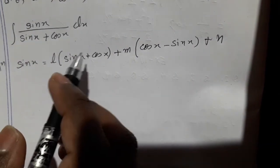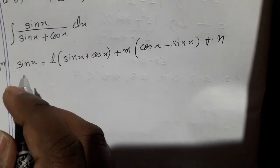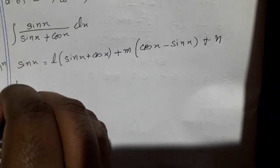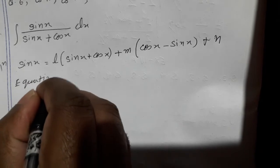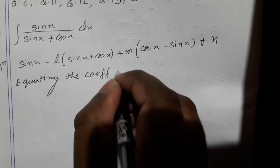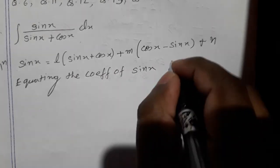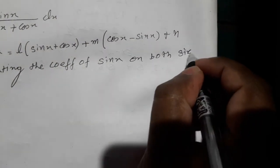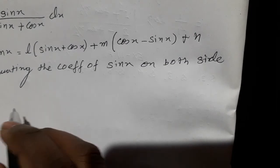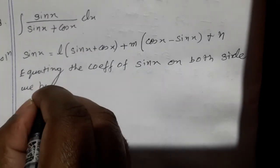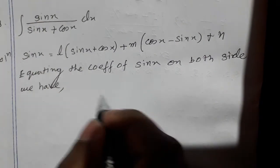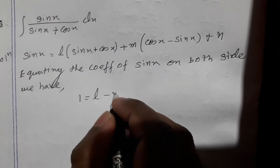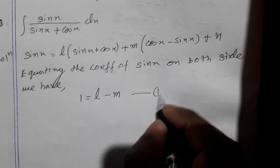Our aim is to determine L, M, and N. We equate the coefficient of sin(x) on both sides. The coefficient of sin(x) on the left side is 1. On the right side, from L·(sin x + cos x) we get L, and from M·(cos x − sin x) we get −M. So we have 1 equal to L minus M. Take this as equation 1.